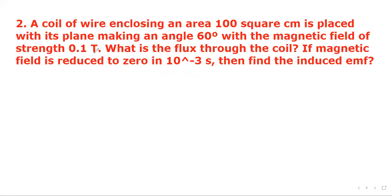Question 2: A coil of wire enclosing an area of 100 square centimeters is placed with its plane making an angle of 60 degrees with a magnetic field of strength 0.1 Tesla. What is the flux through the coil? If the magnetic field is reduced to zero in 10⁻³ seconds, find the induced EMF.